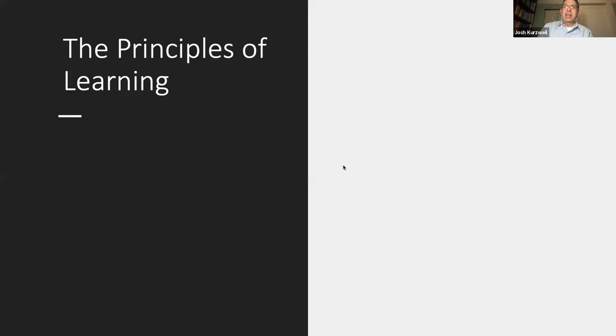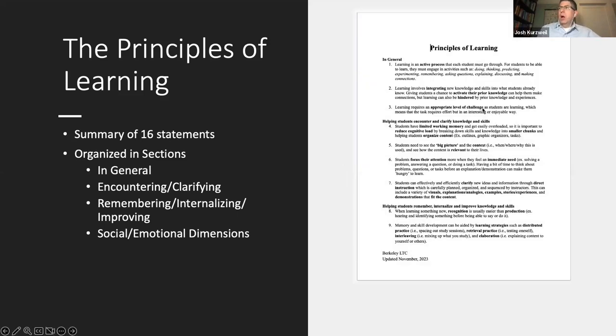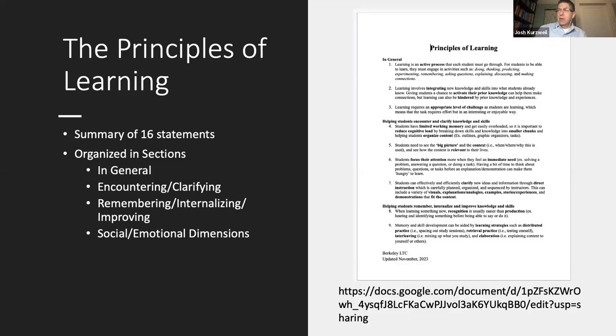So I developed a document called the principles of learning with my team with Jen and Jen White, who's here and Jeff Puccini. I've been using it in my trainings. Basically, it's a summary with 16 statements that sort of go through and try to summarize the research. It's organized into sections. There are general factors that affect learning, things that help people encounter and clarify. Those of you familiar with the ECRA framework, we organize it that way. Things that help people remember or internalize or improve at something. And then the social emotional dimensions is the final thing. You can see there's the general helping students encounter and clarify. There's a second page too. There's a link which I'll share with you in just a moment.